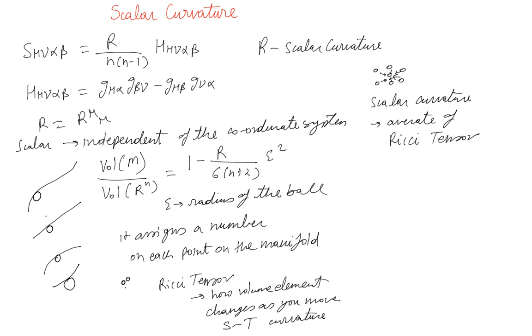If the volume of this ball is larger or smaller than the volume of the ball if it was just flat space, then there is a curvature present, which is accounted by this scalar curvature. Okay, we'll talk more.